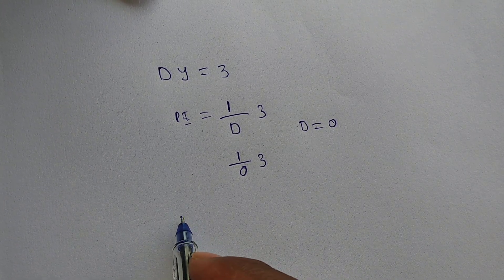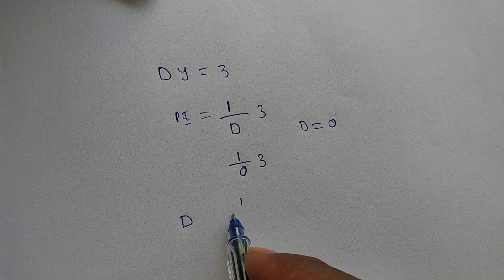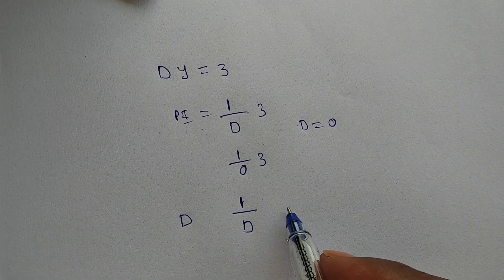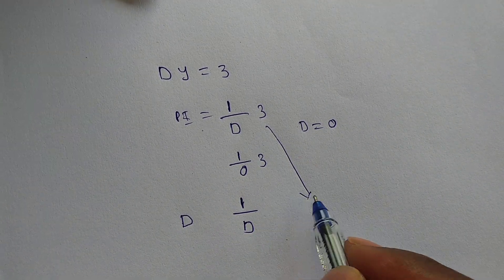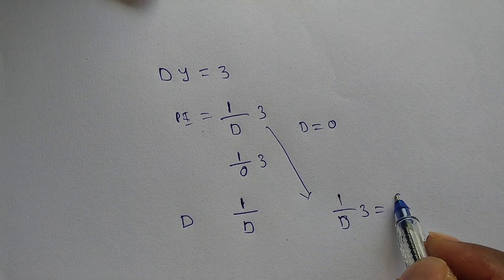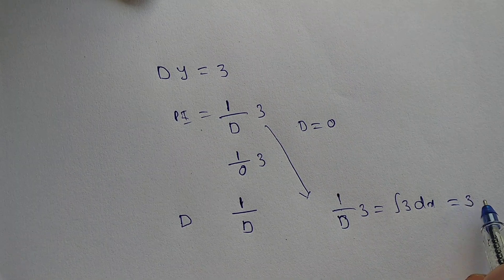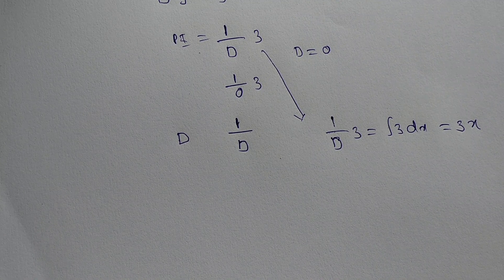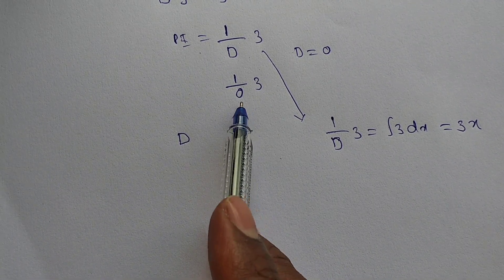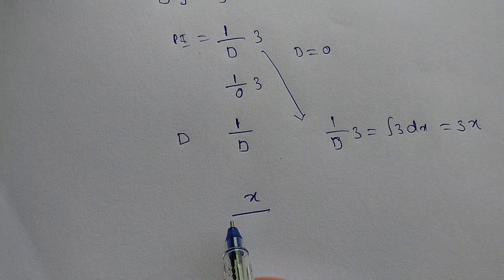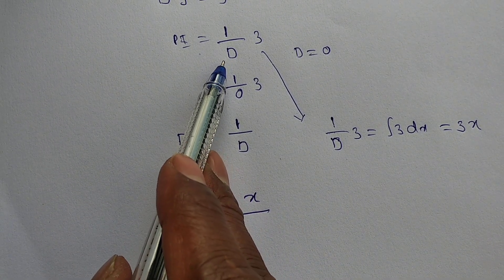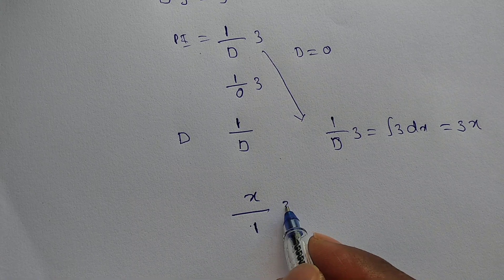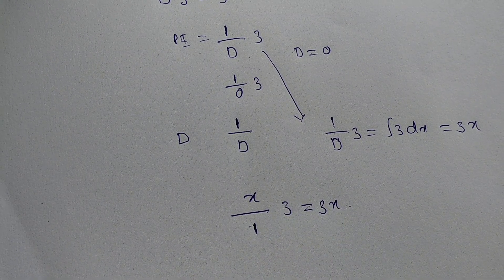There is a formula: whenever the denominator is 0, write x in the numerator and differentiate the denominator with respect to the operator D. For example, 1/D · 3 — differentiating D gives 1 — so you get 1 · 3 = 3x. Both approaches give the same result.